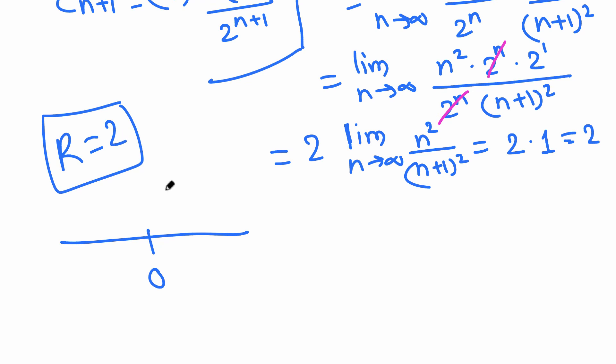Okay, now since we have the center 0 and we know the radius is 2, then we go 2 units to the right and 2 units to the left and get the open interval of convergence negative 2 to 2. Inside this interval the power series converges, outside it diverges.